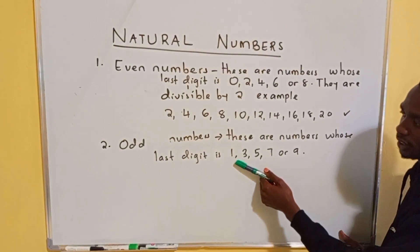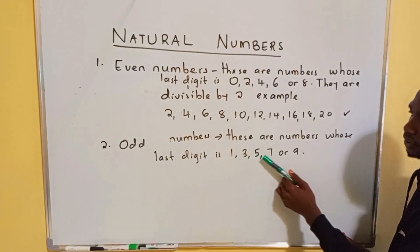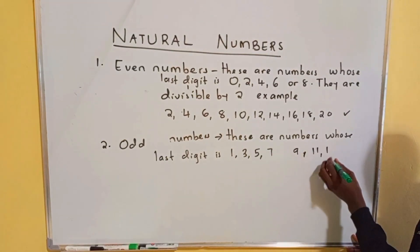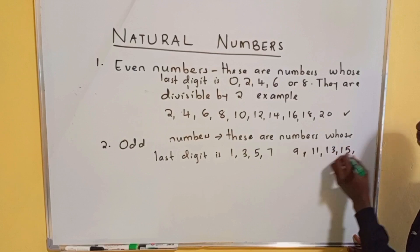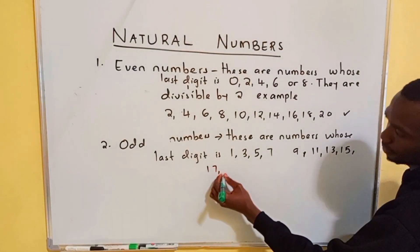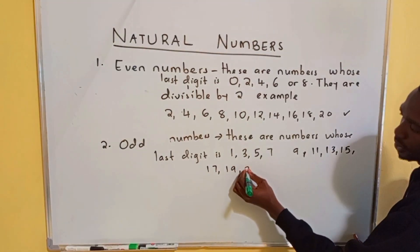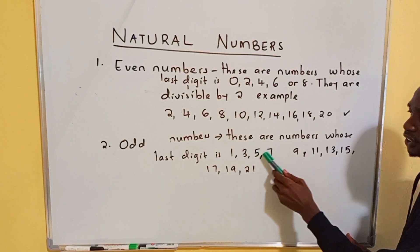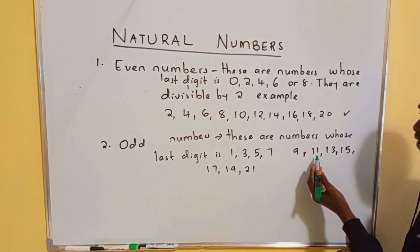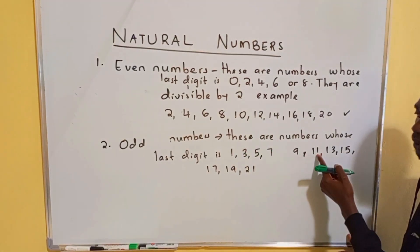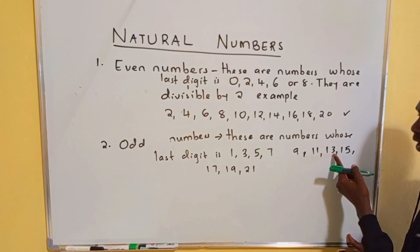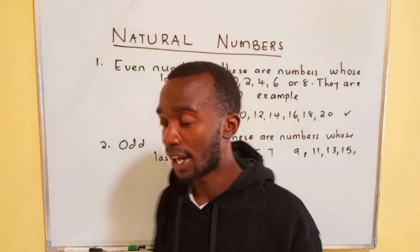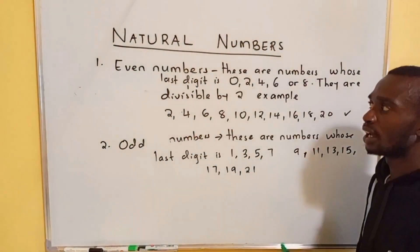The first odd number is 1, then 3, 5, 7, 9, 11, 13, 15, 17, 19, 21. The last digit is either 1, 3, 5, 7, or 9. In 11, the last digit is 1 — it is an odd number. 3, 5, 7, 9, and 1 are all odd numbers.